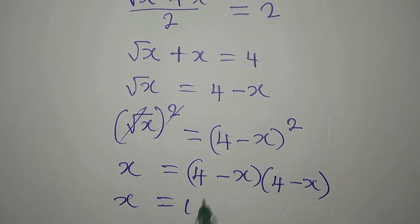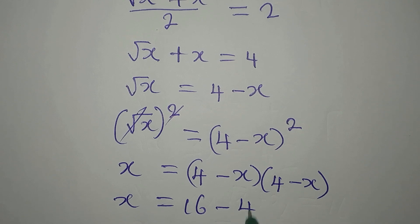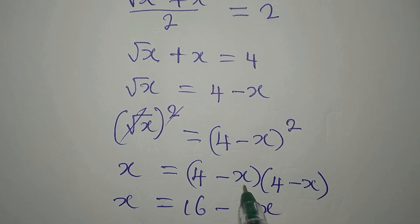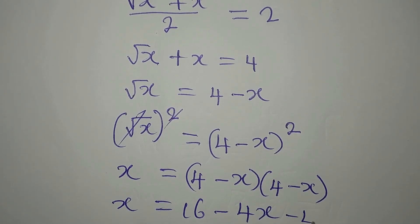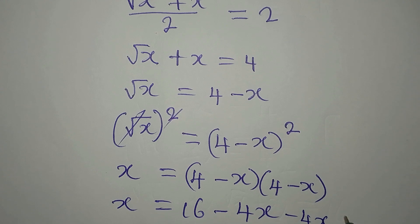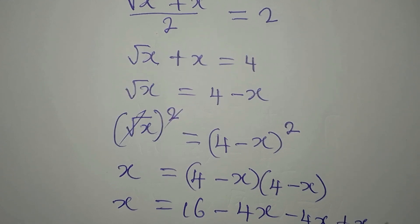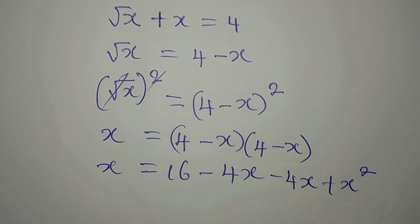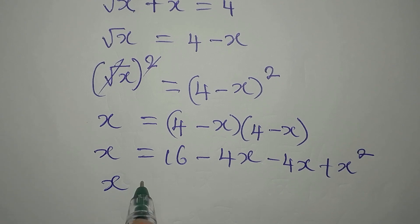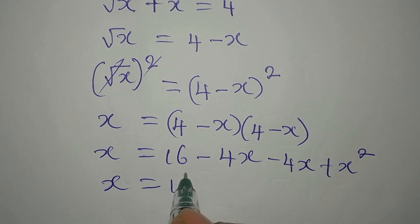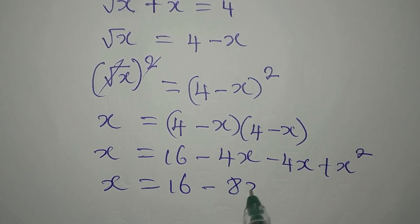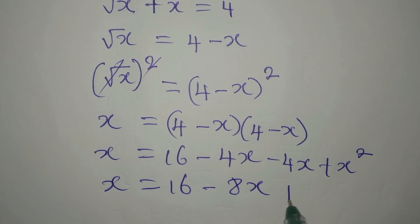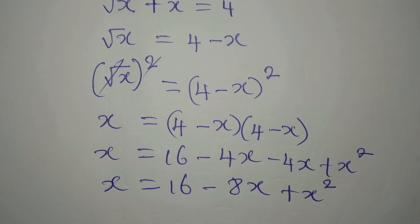Expanding: 4 times 4 is 16, 4 times minus x is minus 4x, minus x times 4 is minus 4x, and minus x times minus x is plus x squared. So x equals 16 minus 8x plus x squared.